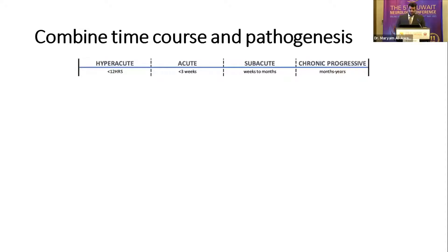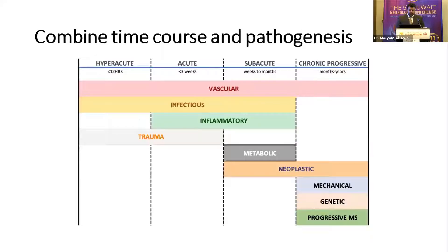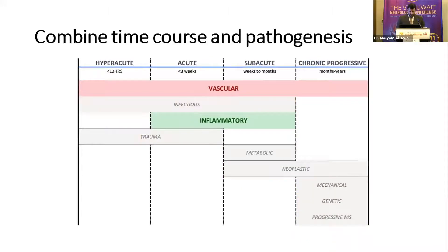Generally speaking, when we look at myelopathy in the textbook, they are usually categorized in two ways: by time course — hyperacute, acute, subacute, and chronic — and according to pathogenesis, whether infectious, inflammatory, vascular, etc. The problem is when you combine both categorizations, you end up with overlap. For this talk, we will focus on two important categories, vascular and inflammatory, both of which can present with different timeframes.